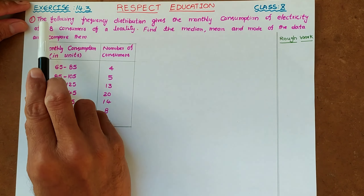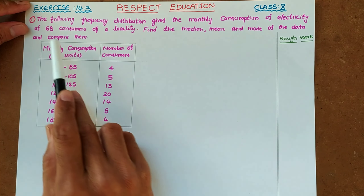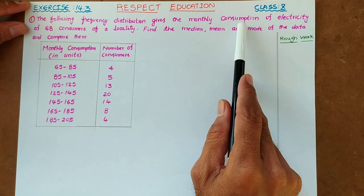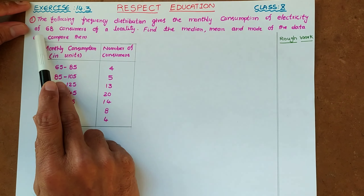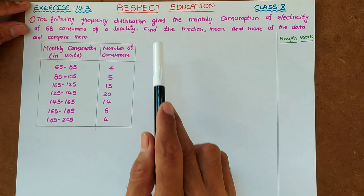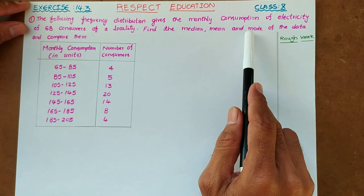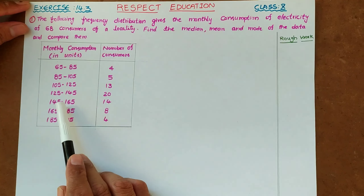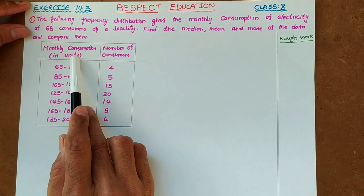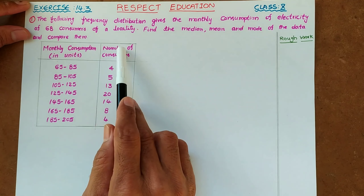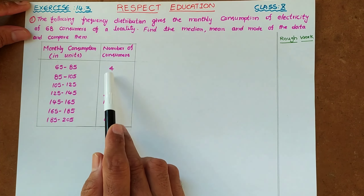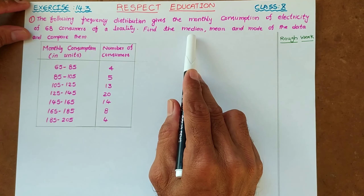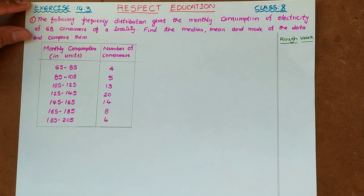Now we see exercise 14.3, problem number 1. The following frequency distribution gives the monthly consumption of electricity of 68 consumers of a locality. Find the median, mean, and mode of the data and compare them. Here is the given data — monthly consumption in units: 65 to 85 units, number of consumers 4; 85 to 105 units, consumers 5; and so on.